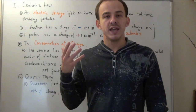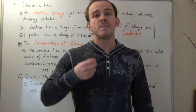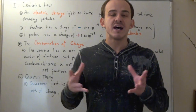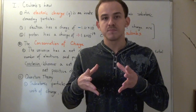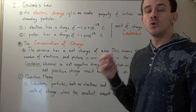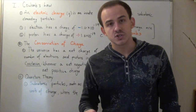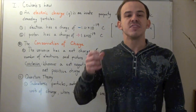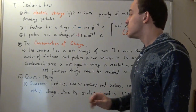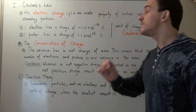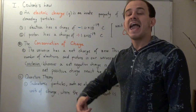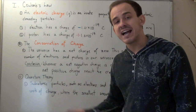In the same way that we have conservation of mass — mass cannot be destroyed or created, and the amount of mass in our universe stays constant — there is also conservation of charge. The amount of charge in our universe is always constant and stays the same. Charge cannot be destroyed, it cannot be created. The universe has a net charge of zero, which means the total number of electrons and protons in our universe is exactly the same.